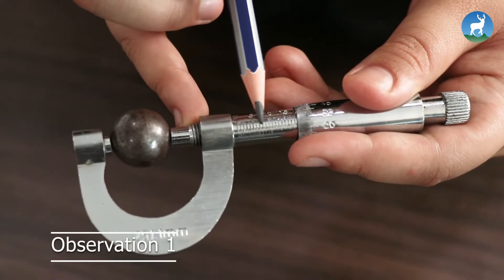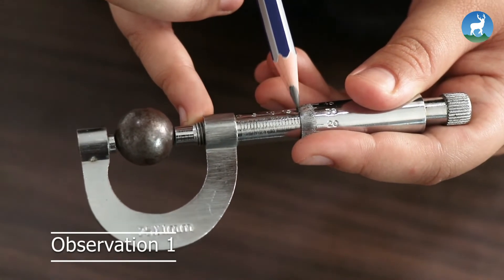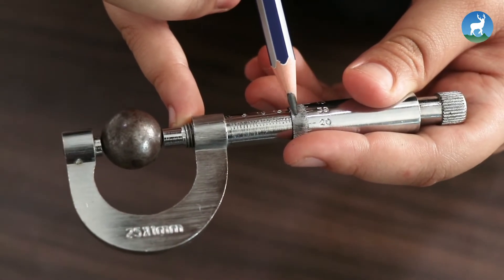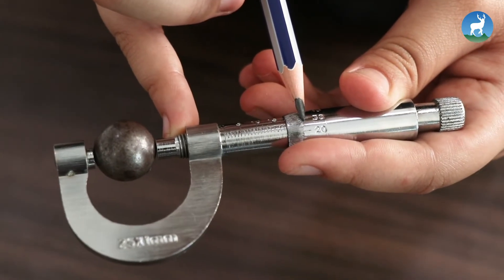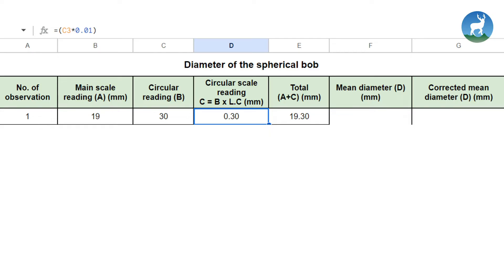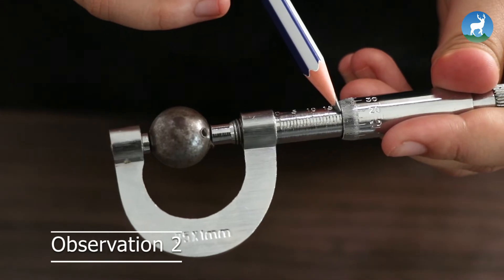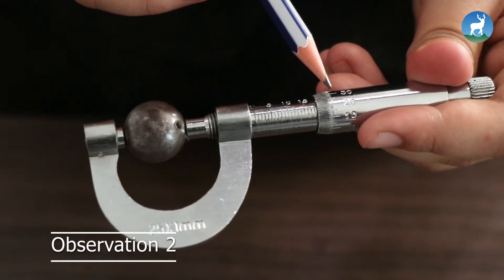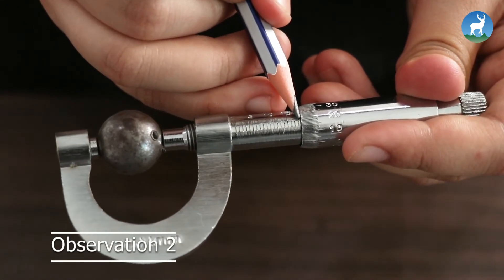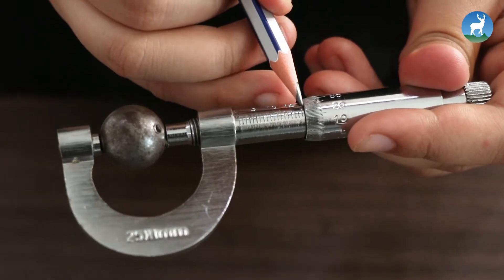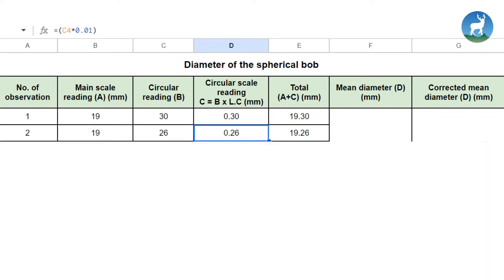For diameter of spherical bob, the mean scale reading is taken to be 19 mm, circular reading is 30, value of CST is 0.3 and total is 19.3. For observation 2, mean scale is 19, circular reading is 26, value of CST reading is 0.26 and total is 19.26.